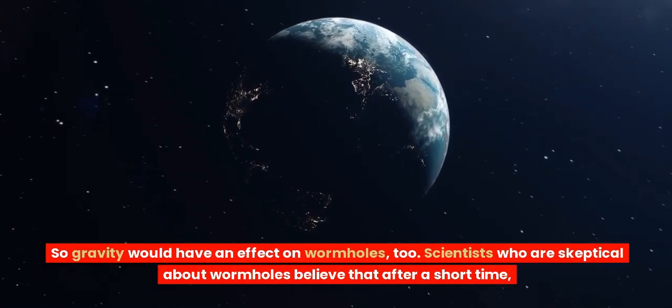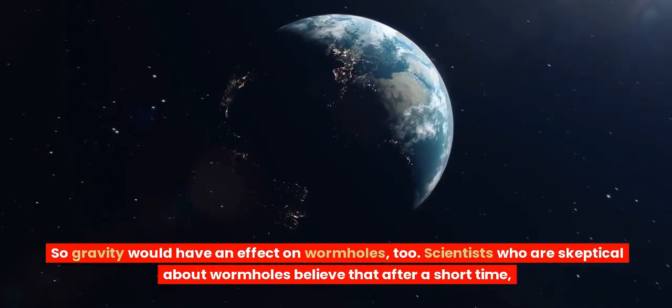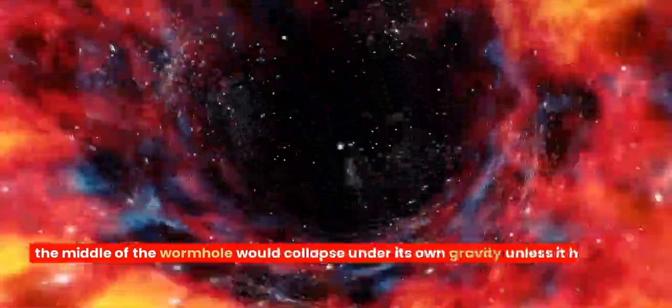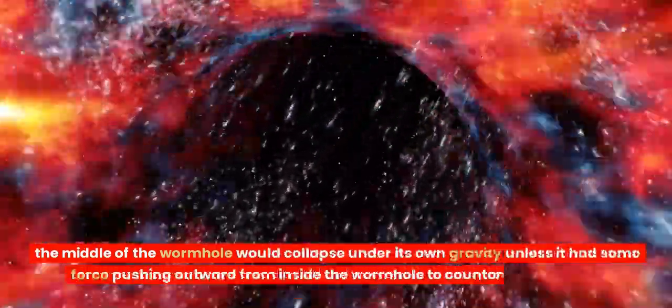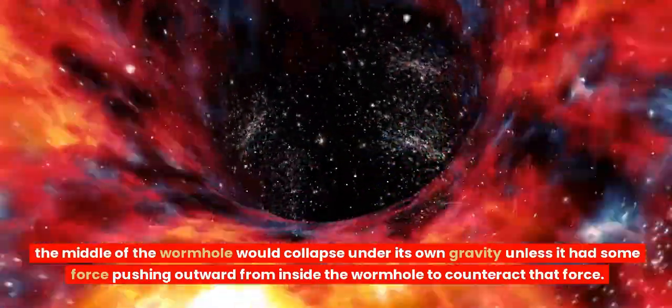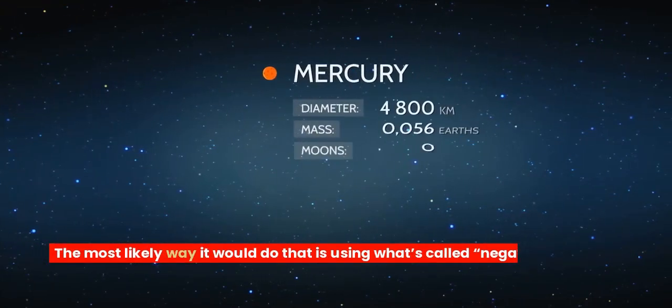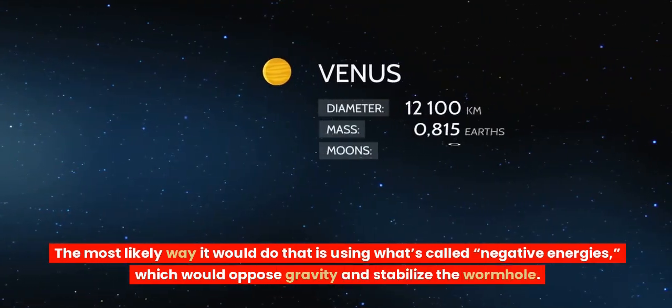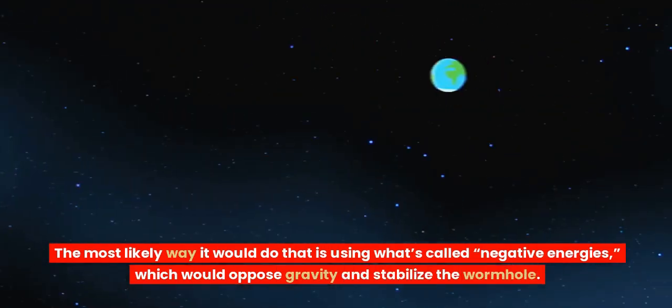Scientists who are skeptical about wormholes believe that after a short time, the middle of the wormhole would collapse under its own gravity unless it had some force pushing outward from inside the wormhole to counteract that force. The most likely way it would do that is using what's called negative energies, which would oppose gravity and stabilize the wormhole.